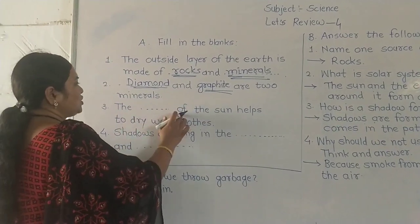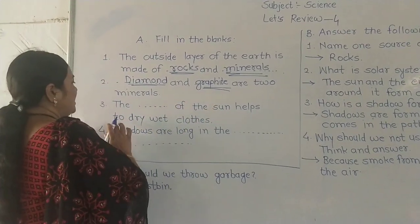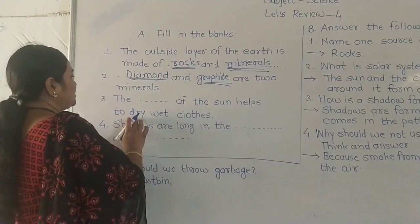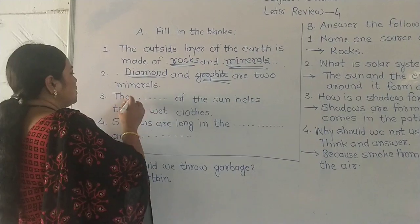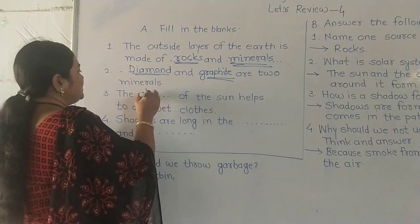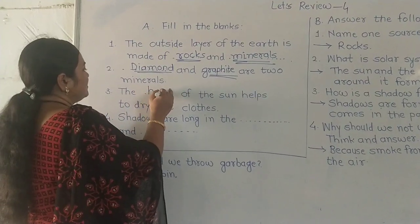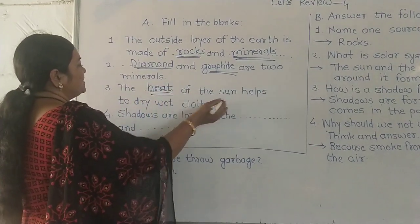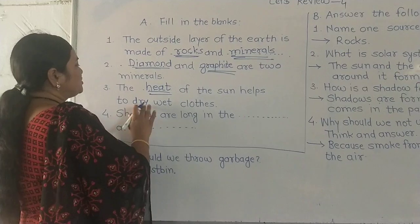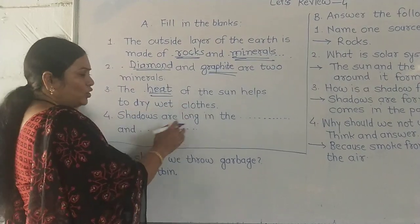Number 3: The blank of the sun helps to dry wet clothes. Our answer is heat. The heat of the sun helps to dry wet clothes.